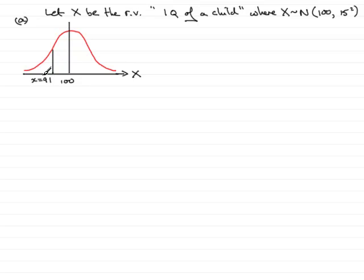So we're looking for the probability that x is less than 91, and that is given by this area here to the left of 91.